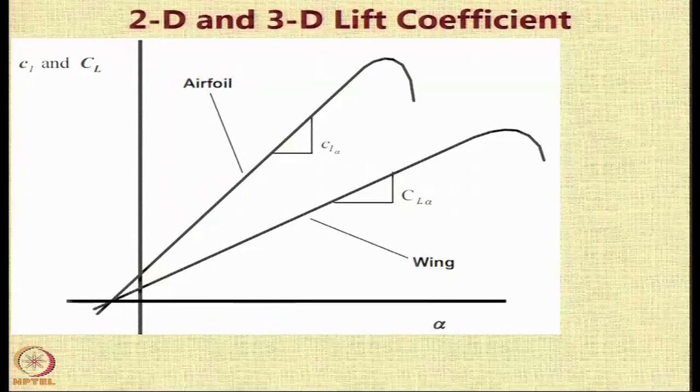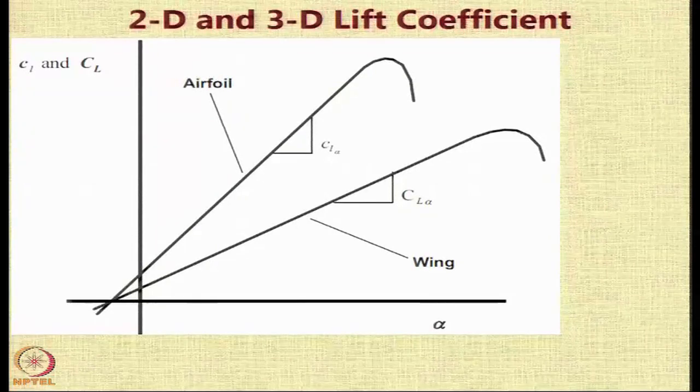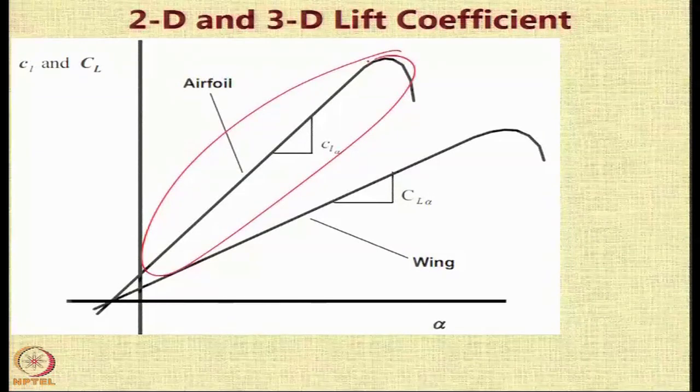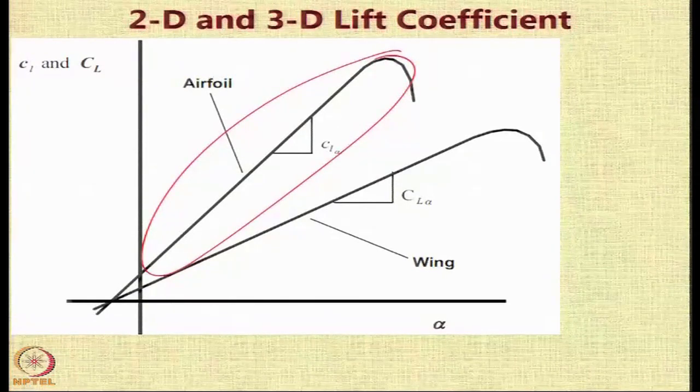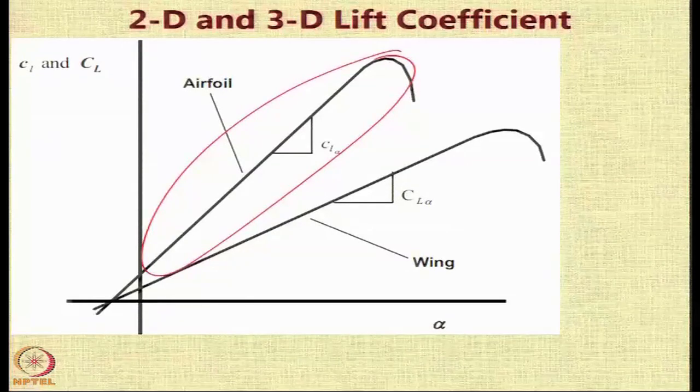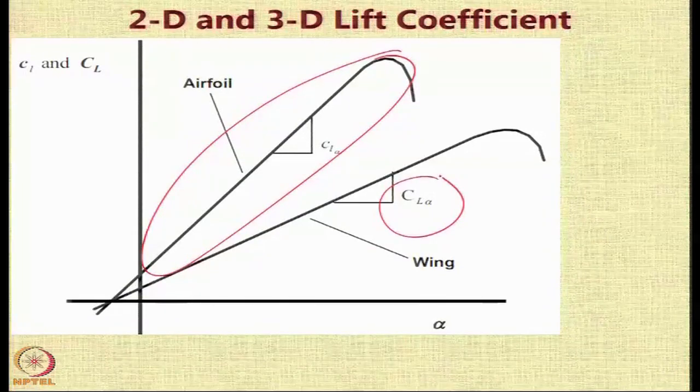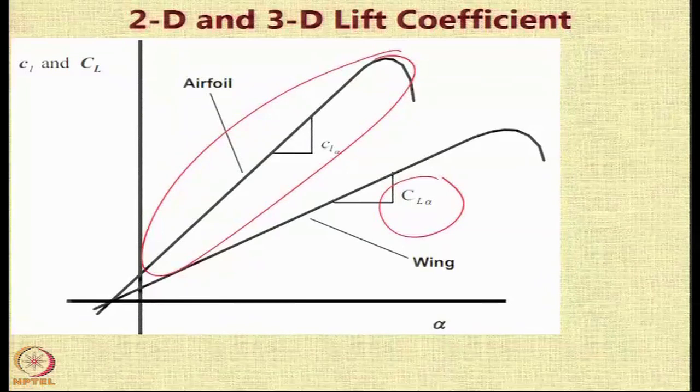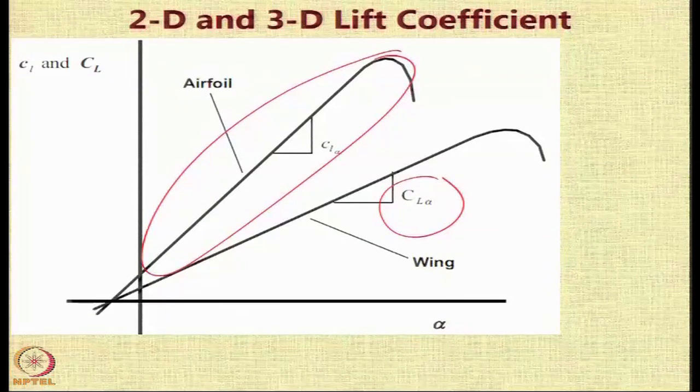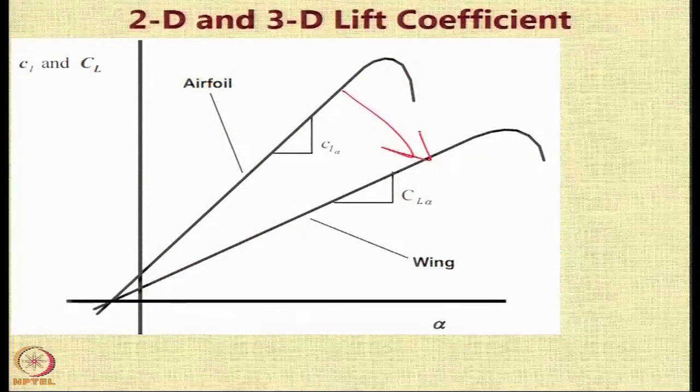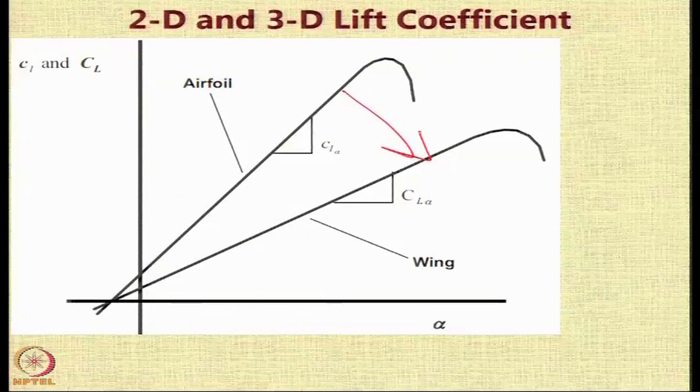This is usually a larger value as you can see here, it is a larger value as compared to the lift coefficient of a wing which is the 3d lift coefficient including the 3d effect and that is normally depicted as capital C capital L alpha or the c l alpha. And this particular reduction between the 2d and the 3d value is because of the 3d effects on the wing.